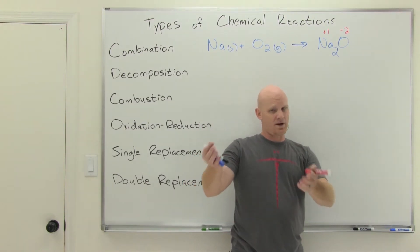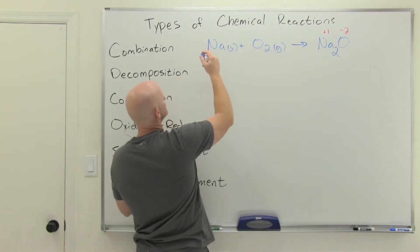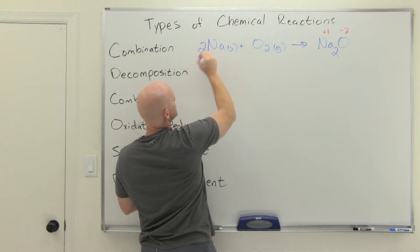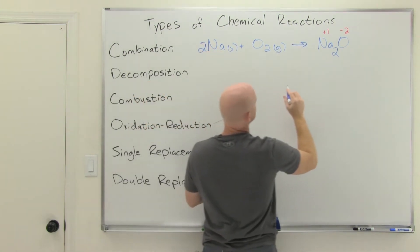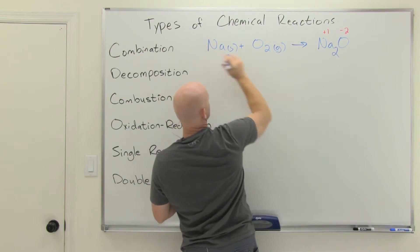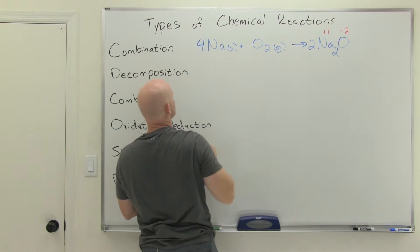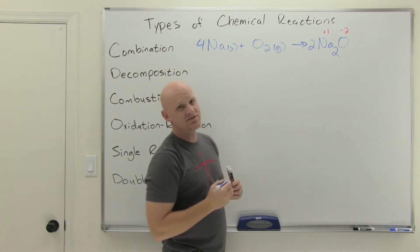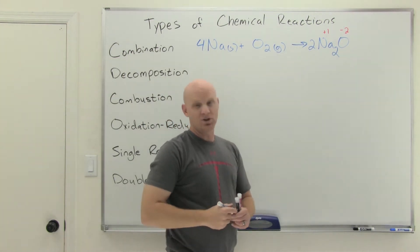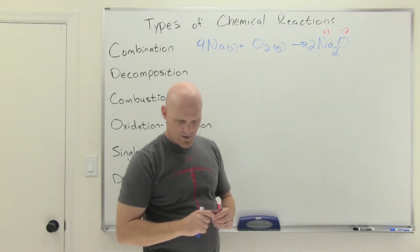From here we might expect you to balance the reaction, especially in light of the last lesson. We put a two in front of O2 to balance the oxygens, which forces us to put a four in front of Na to balance the sodiums — just like it shows up on your handout.